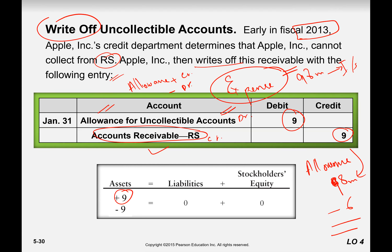This is the tricky part: we made an expense in advance and we are not disturbing that one because our planning is based on that expense. Anything that happens in reality, we charge it to our reserve and we decrease our reserve. Our reserve is a contra account for accounts receivable — opposite to it. Accounts receivable increases with a debit; allowance increases with a credit because it is a contra account. If accounts receivable decreases, it is credit; if allowance decreases, it is debit. So the entry is: debit allowance for uncollectible, credit accounts receivable.